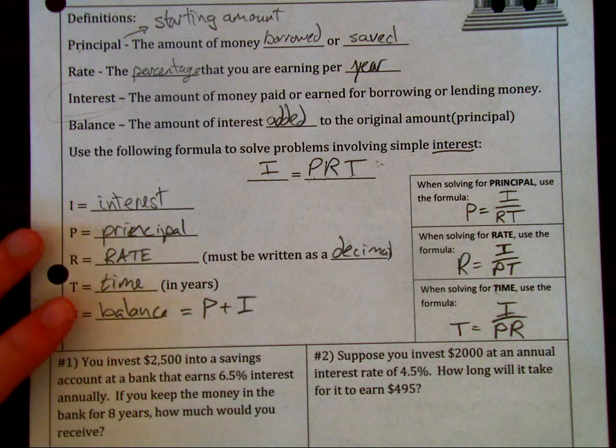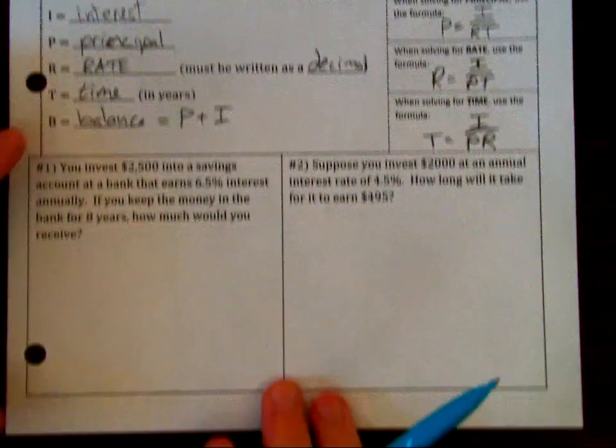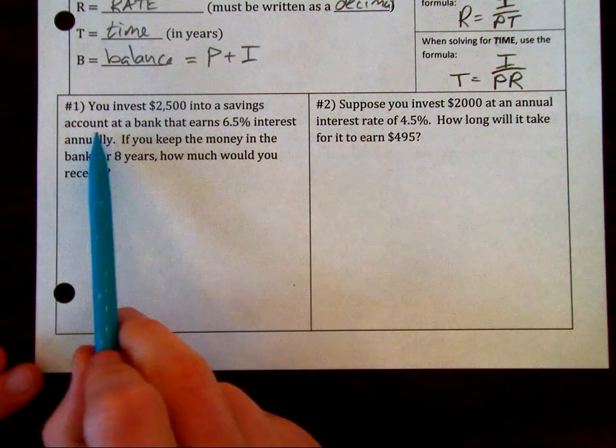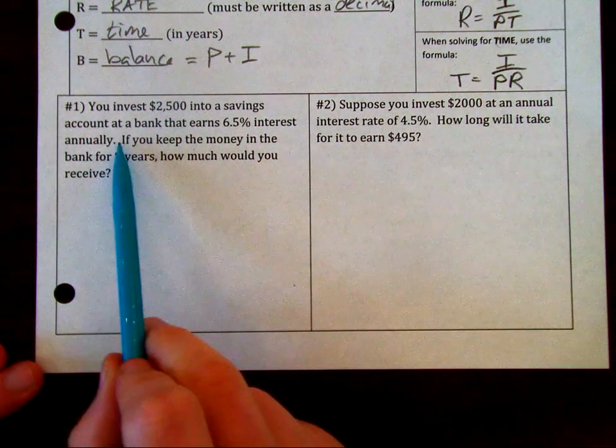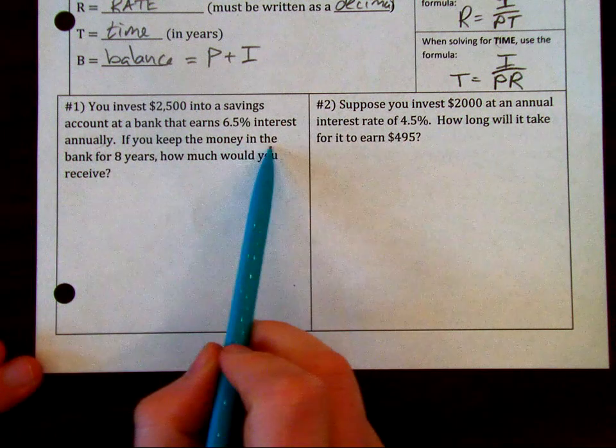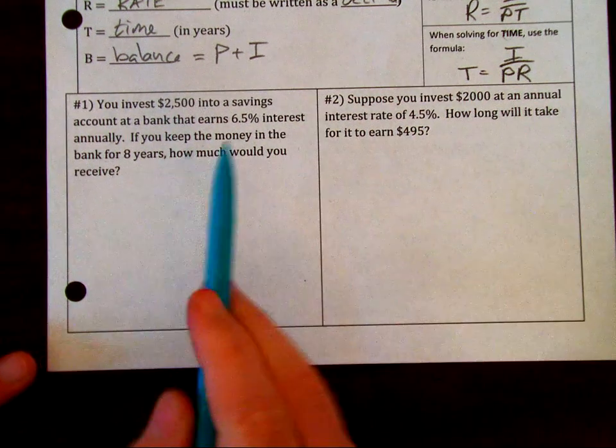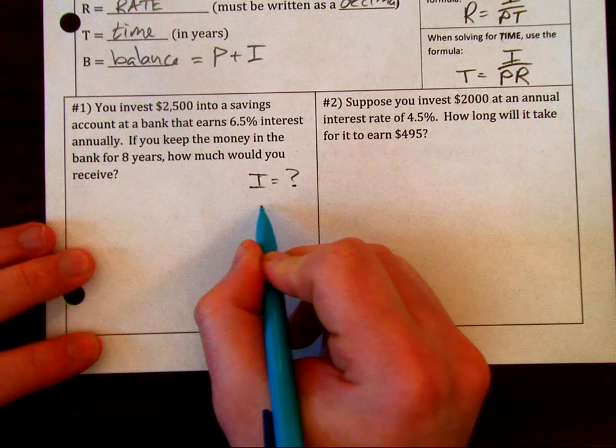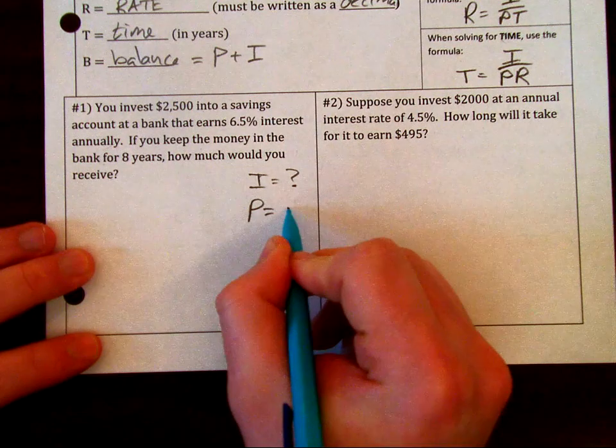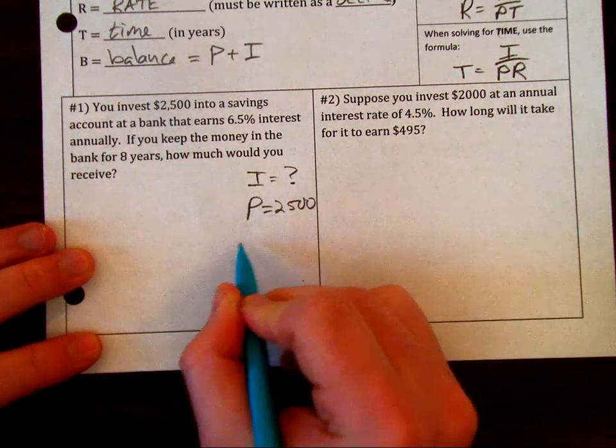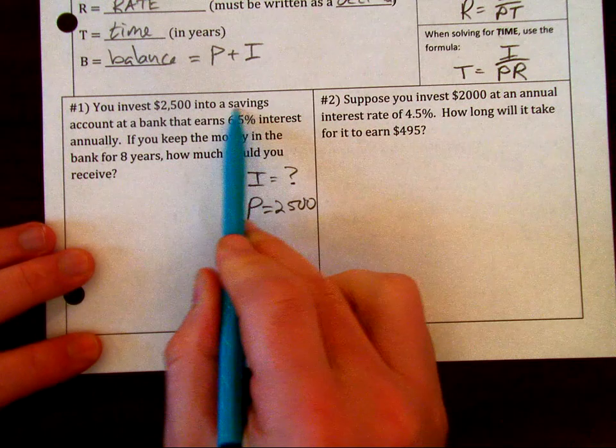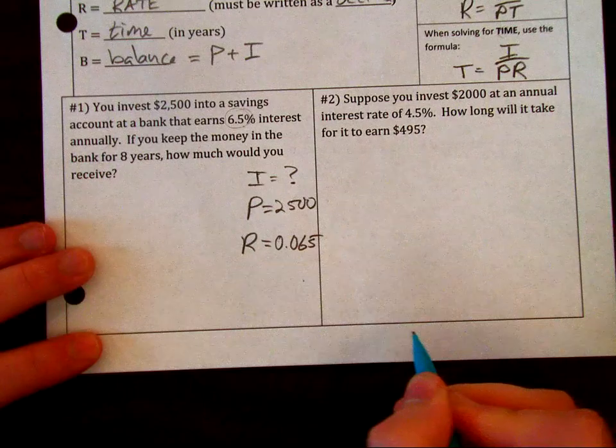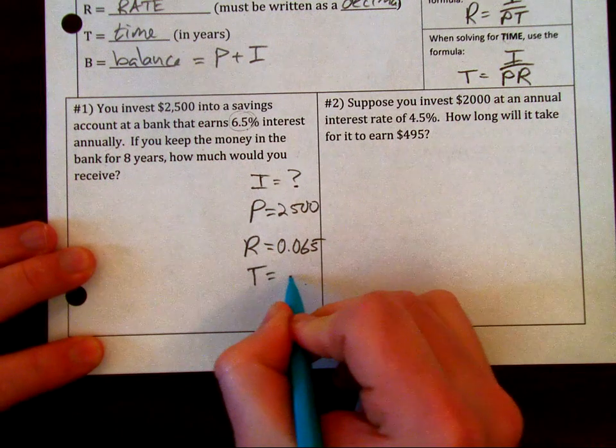I'll do a couple of examples for you. It says you invest $2,500 into a savings account at a bank that earns 6.5% interest annually. If you keep the money in the bank for eight years, how much would you receive? You're looking for interest in this one. Our principal is that starting amount, $2,500. Our rate as a decimal is 0.065, and our time in years is 8 years.